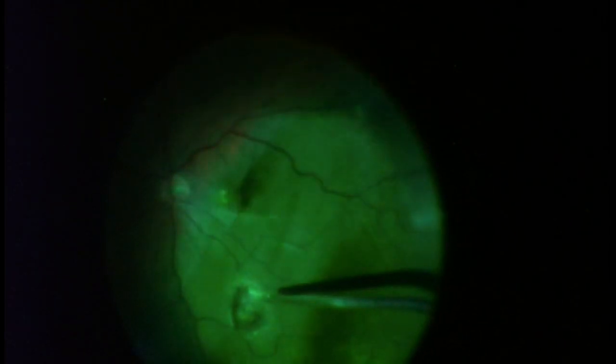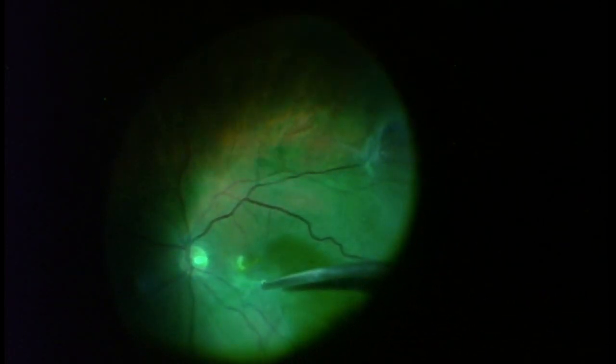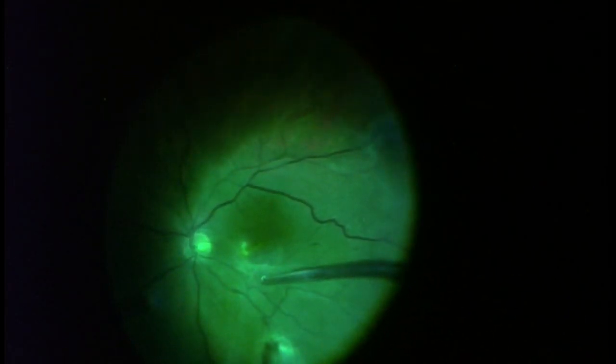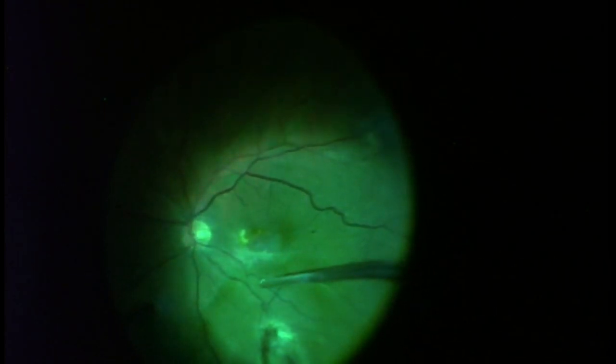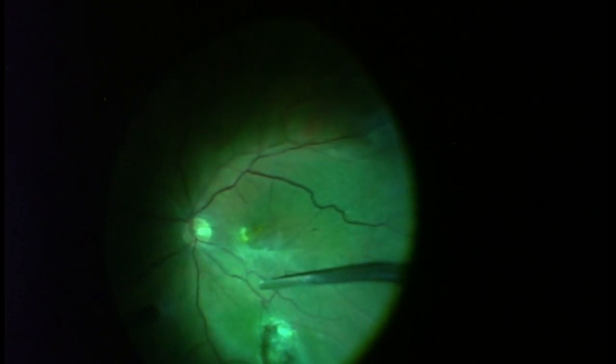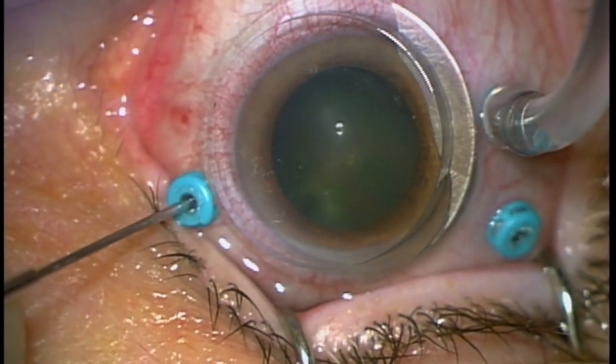That metal rod that you see, the vitrector, is actually removing fluid. So the tube acts as a conduit to keep the eye filled with balanced salt solution, which is just a fancy term for artificial saline. The goal at this time is to remove the excess dye. Once I've done that, I'm going to put on a magnifying glass, which I just did there, and put the forceps in through the right sclerotomy.